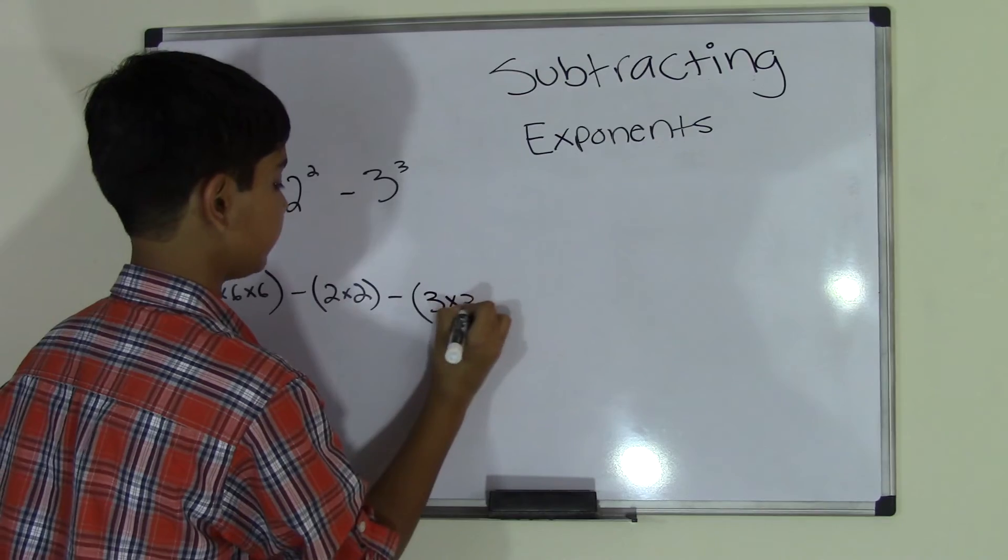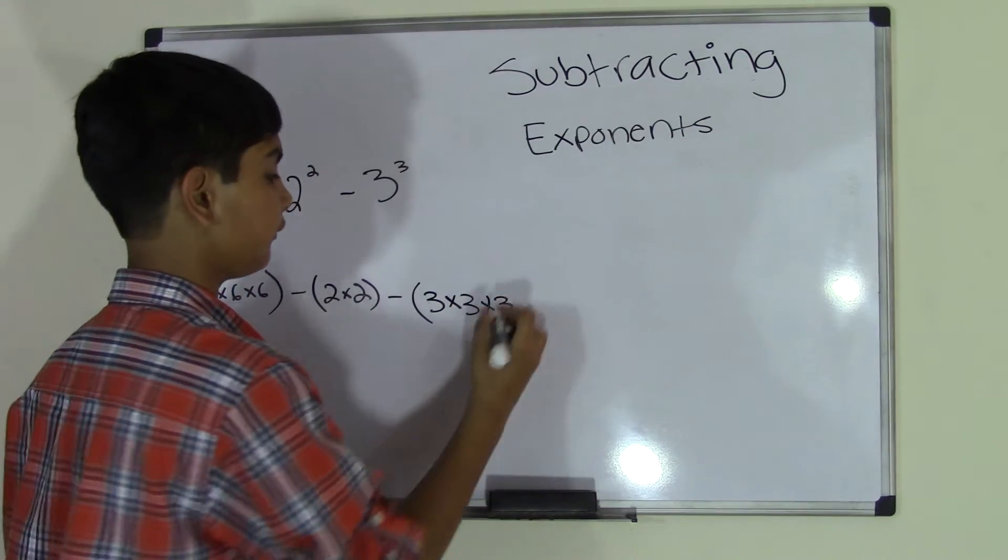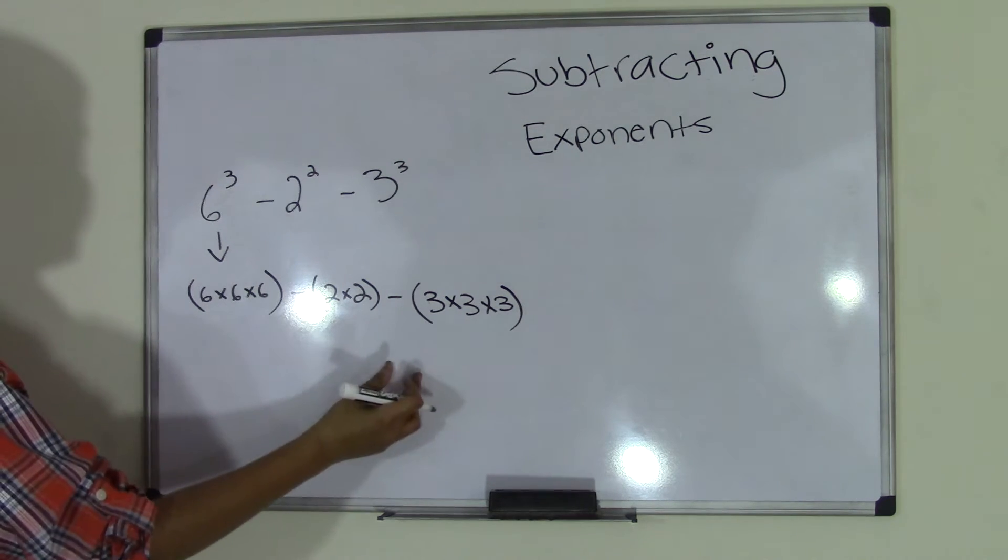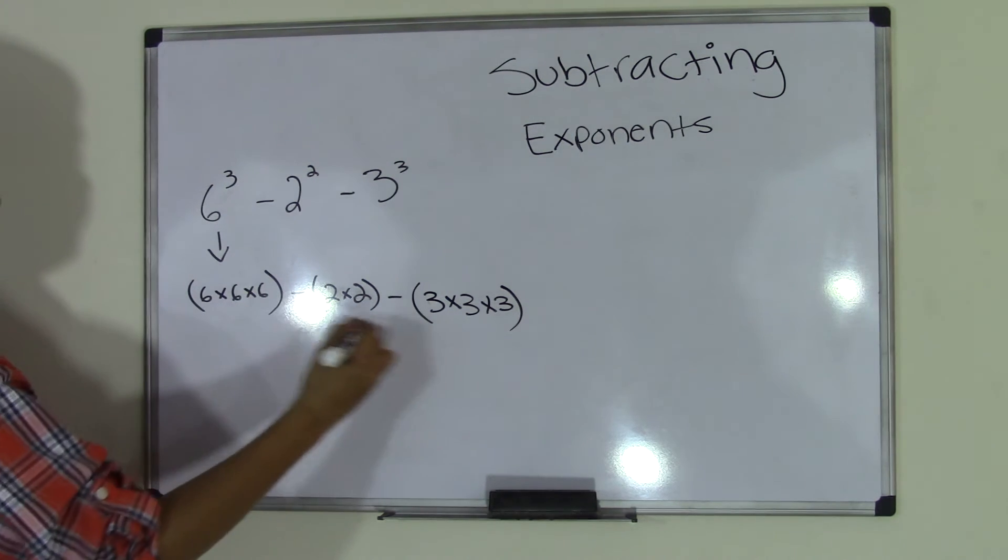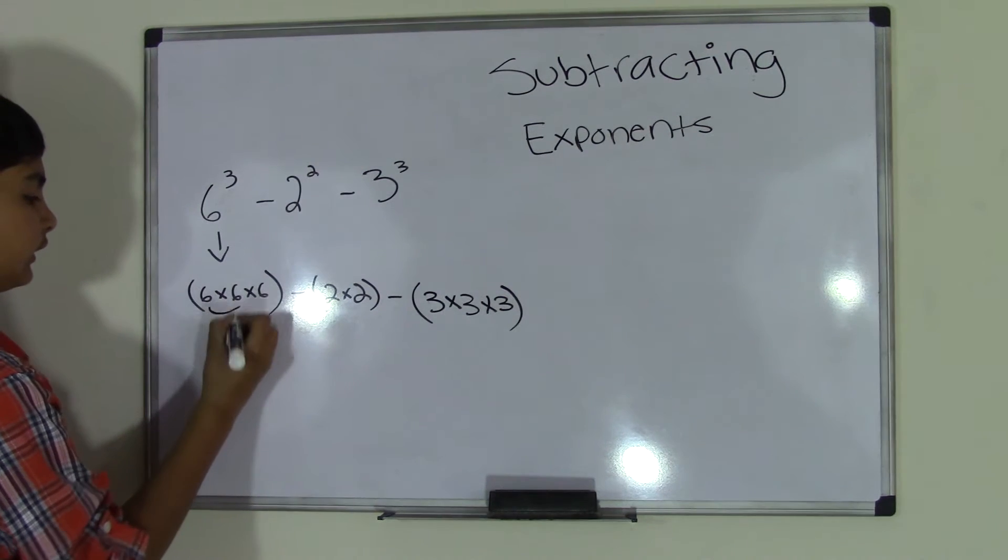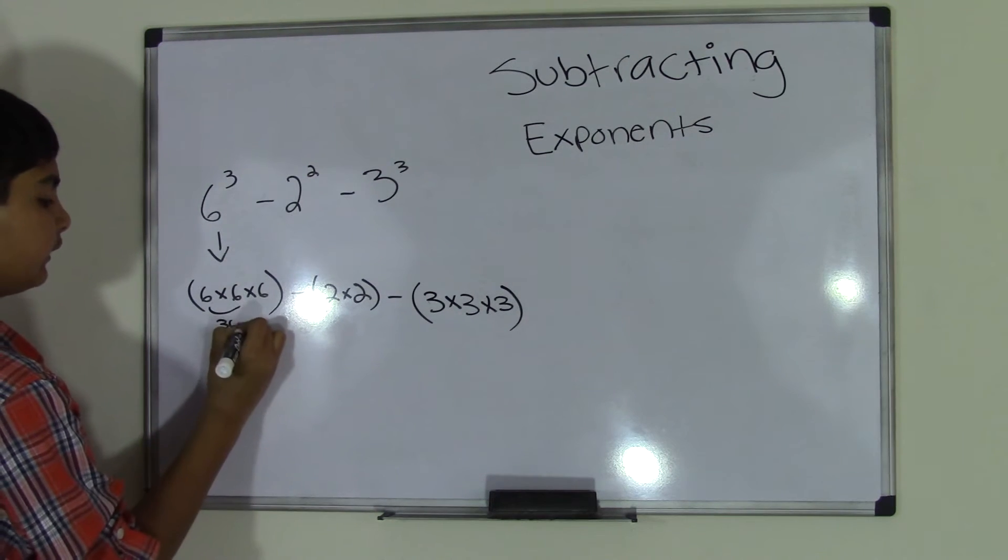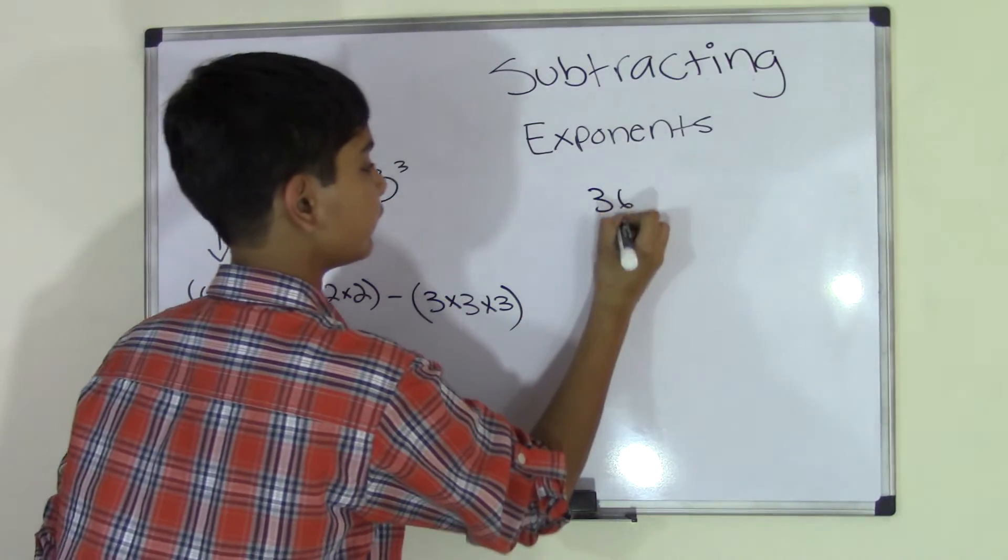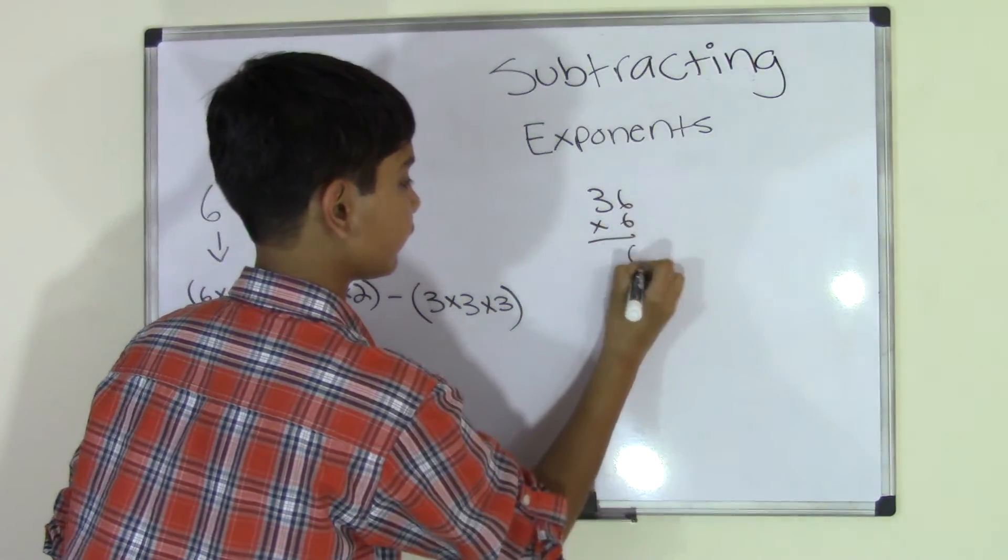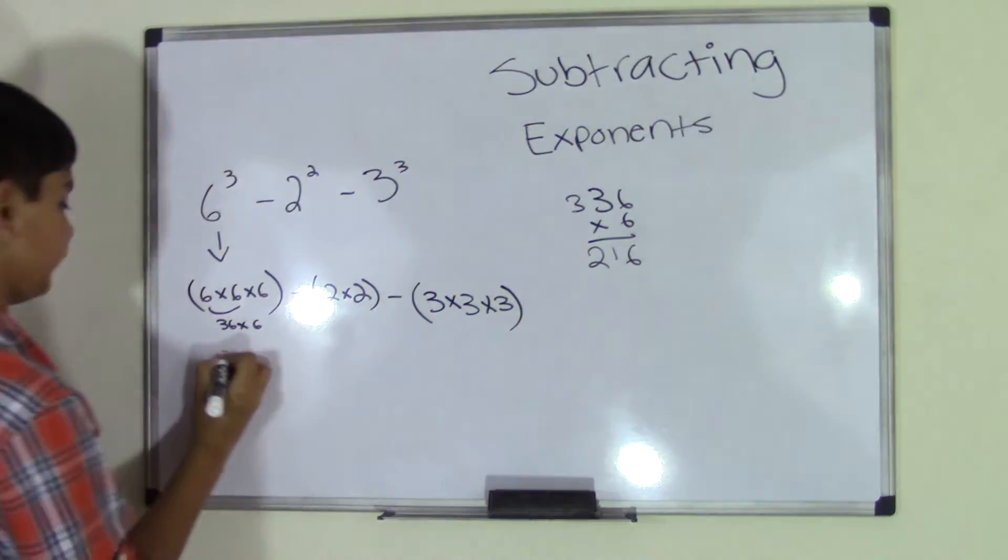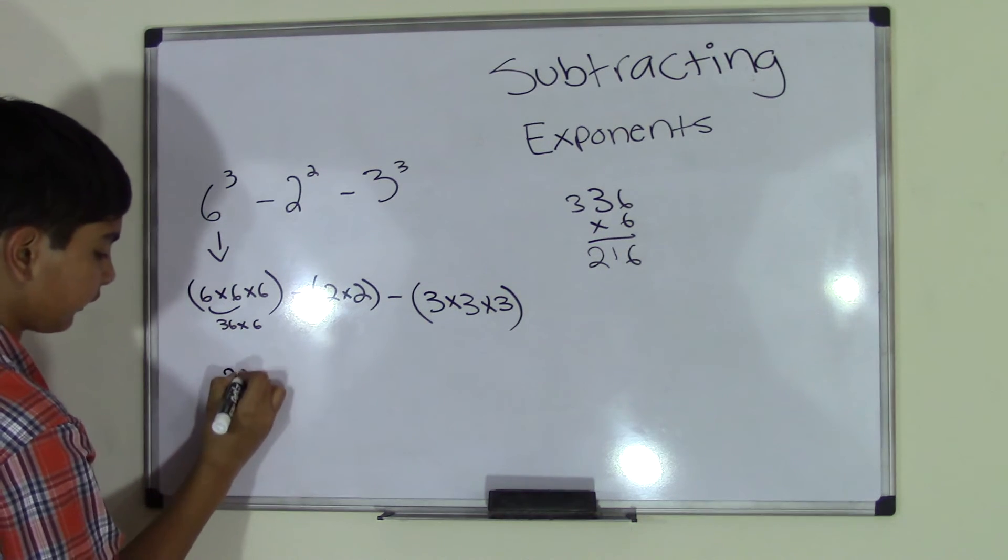Now we can understand this better. We have three sections and we just have to get the products and subtract them. 6 times 6 is 36, times 6 is... 36 times 6 is 216.